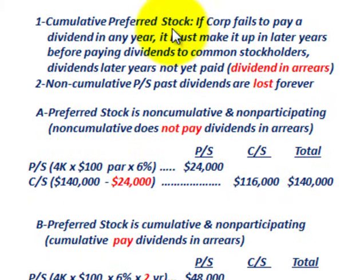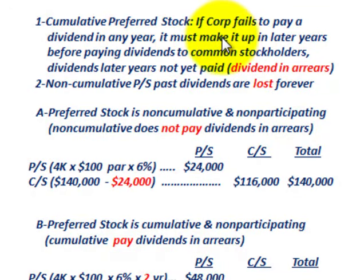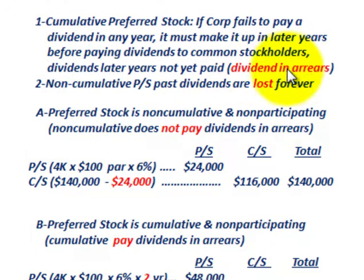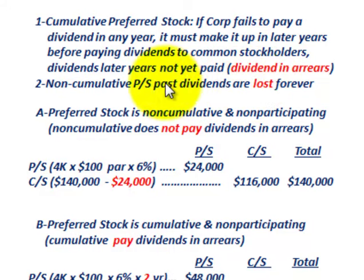We're going to go through three different cases for this preferred stock. Cumulative preferred stock is where if the corporation fails to pay dividends in any year, it must make it up in later years before paying dividends to common stockholders. Those unpaid amounts are called dividends in arrears. Non-cumulative preferred stock means past dividends that would have been payable are lost forever and don't have to be paid.